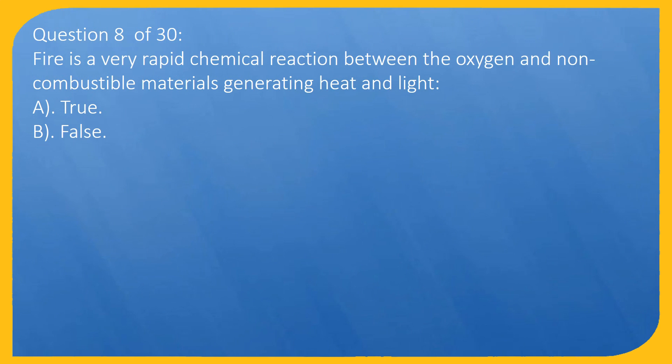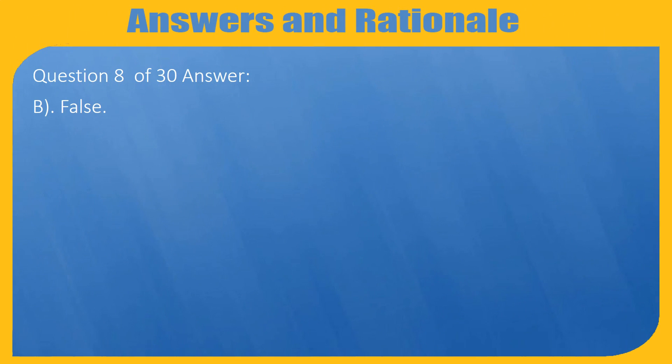Question 8 of 30: Fire is a very rapid chemical reaction between the oxygen and non-combustible materials generating heat and light. A. True, B. False. Answer: B. False.